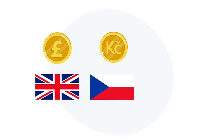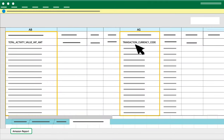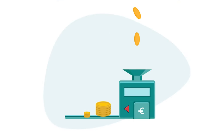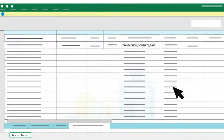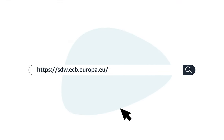For example, GBP in the UK, CZK in Czech Republic, and Euro in Italy. If Column AG does include a currency other than the reporting currency, then you will have to do a currency conversion. The conversion rate you should use is the one related to the date stated under Transaction Complete Date for the relevant transaction, and should be taken from the website of the European Central Bank.